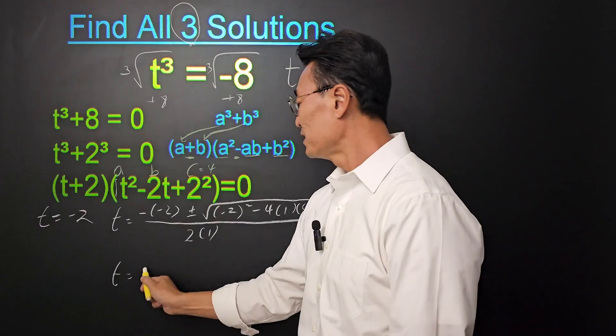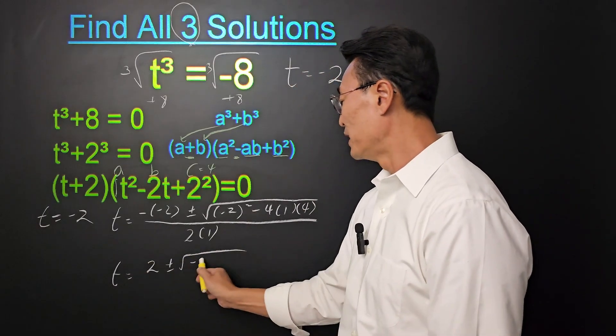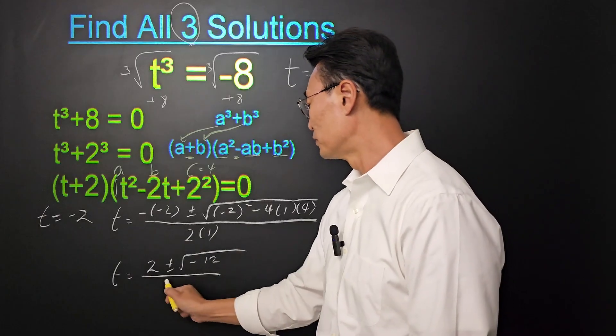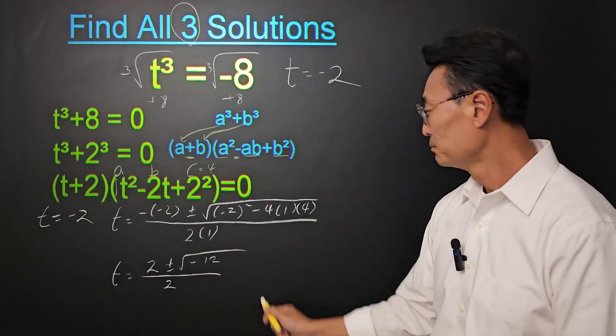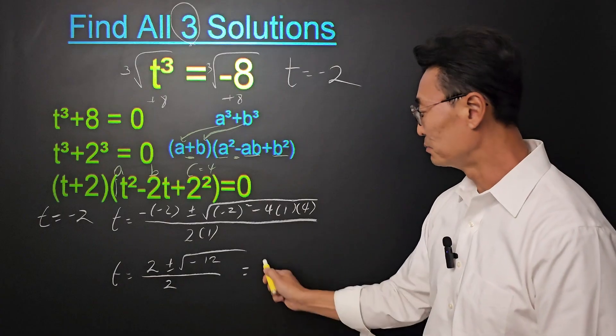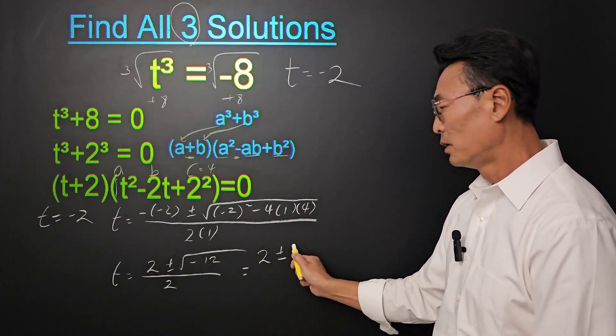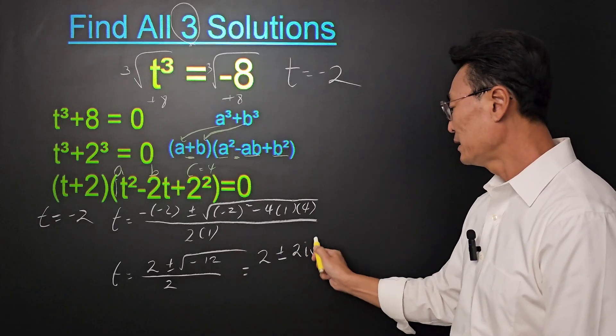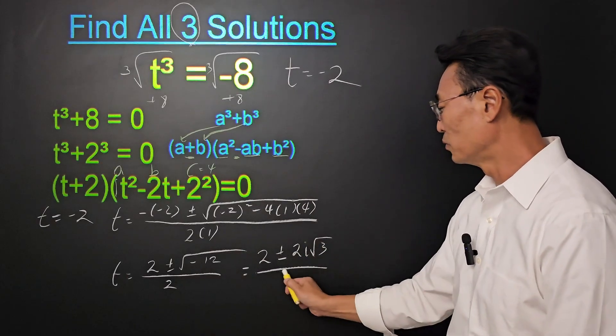If we simplify this, it'll be 2 plus minus square root of negative 12, all over 2. And then simplify this even more, will be 2 plus minus 2i root 3, all over 2.